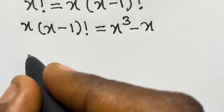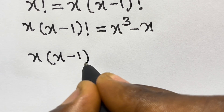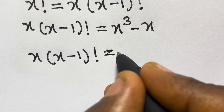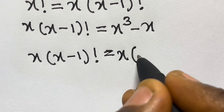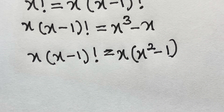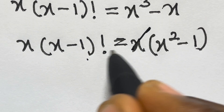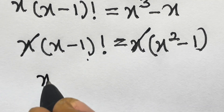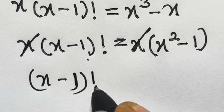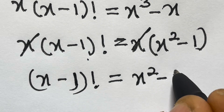So we have x times x minus 1 factorial equals x cubed minus x. Let's factorize the right side: we have x times x squared minus 1. So we can divide both sides by x, and we'll be left with x minus 1 factorial equals x squared minus 1.